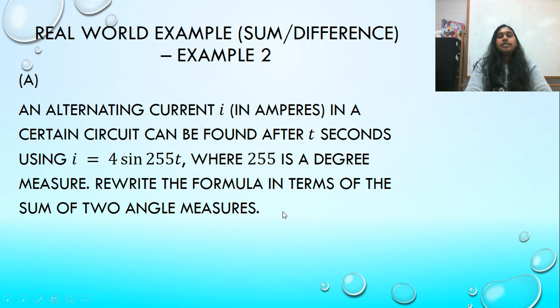Okay, so let's jump on in to a real-world example using sum and difference. So I have an alternating current, i, in amperes. This is just a unit. You don't have to know what amperes is. You just have to know that that's a unit.